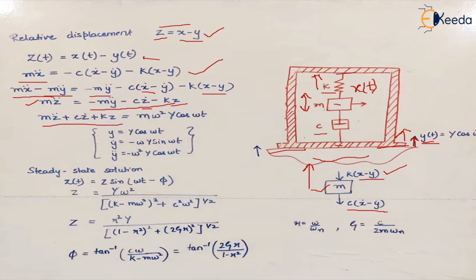Taking all z terms to one side, we get mz̈ on the right-hand side driven by mÿ. The motion of the vibrating base is simple harmonic, so ÿ = −ω²Y cos(ωt). This comes from differentiating y = Y cos(ωt): ẏ = −ωY sin(ωt), and ÿ = −ω²Y cos(ωt), and with the negative sign from the equation it becomes positive, giving us ω²Y cos(ωt). This is a forced damped vibration system.